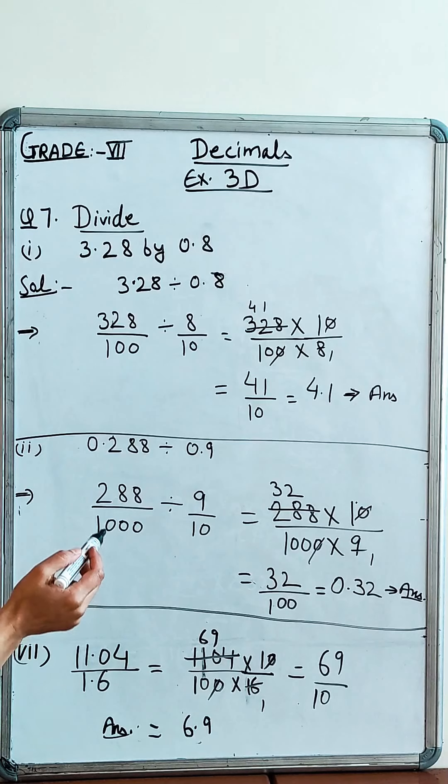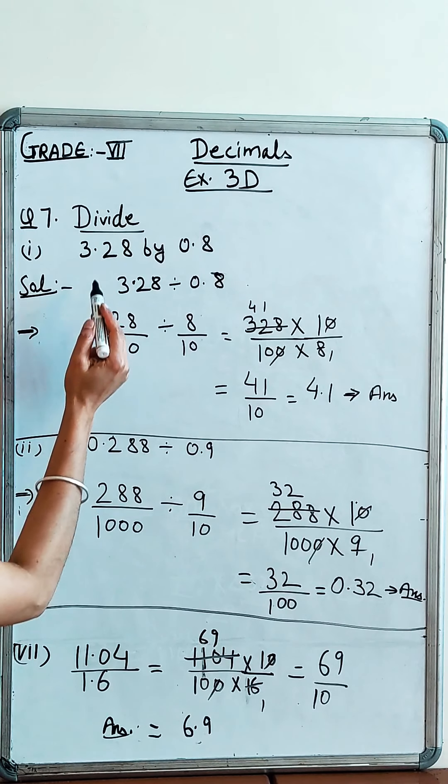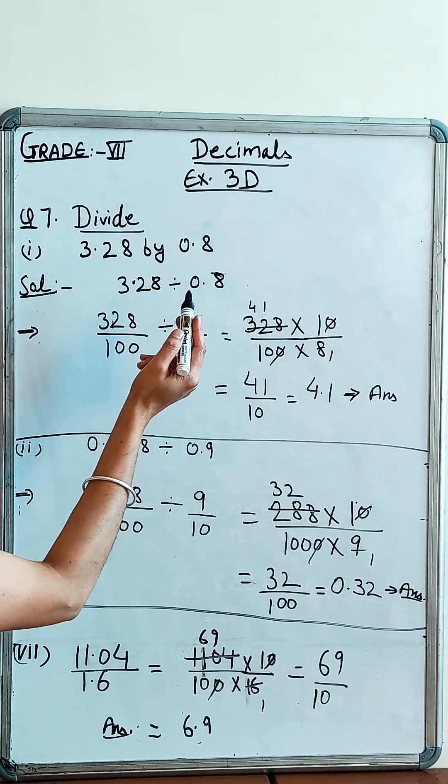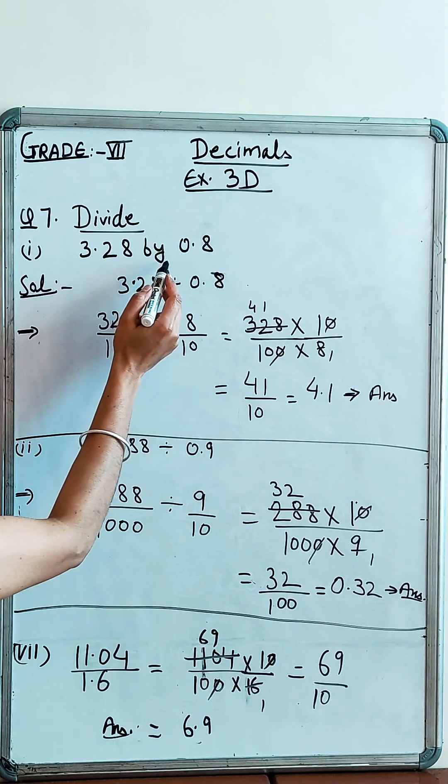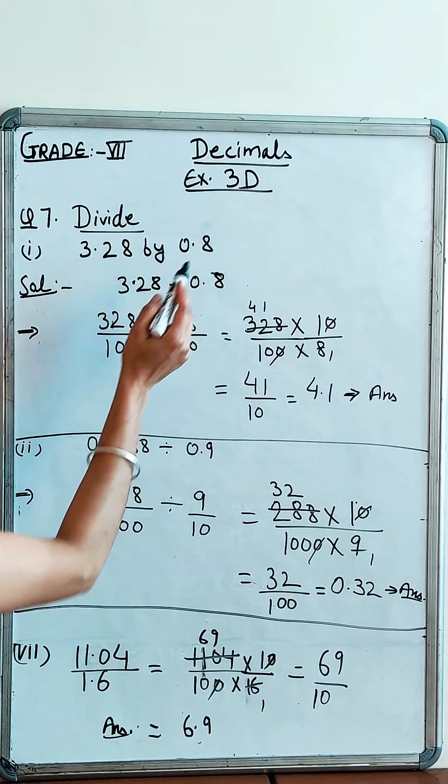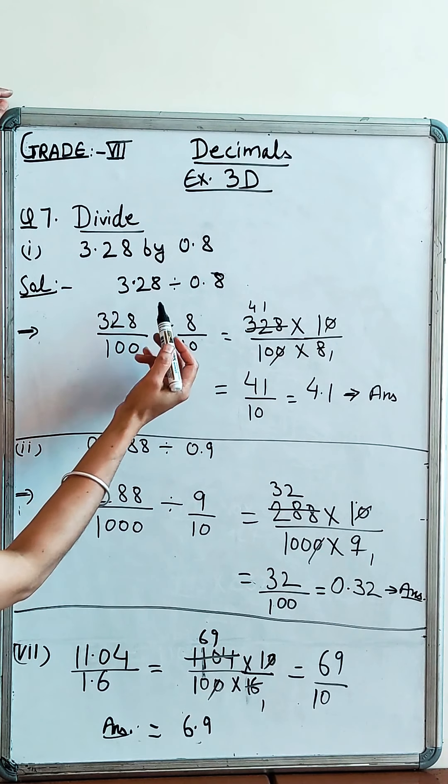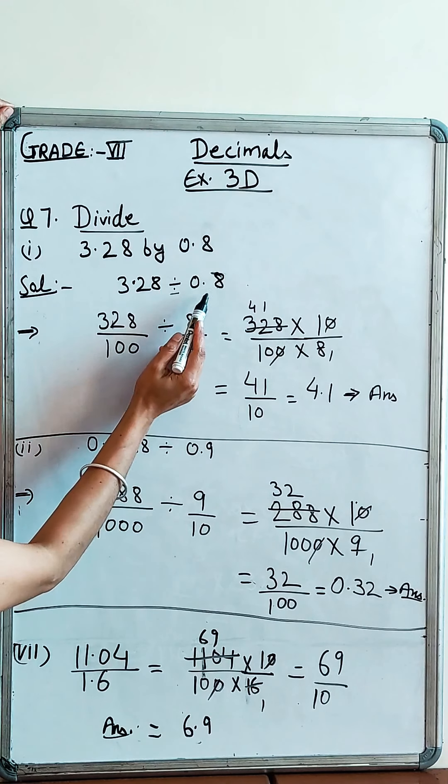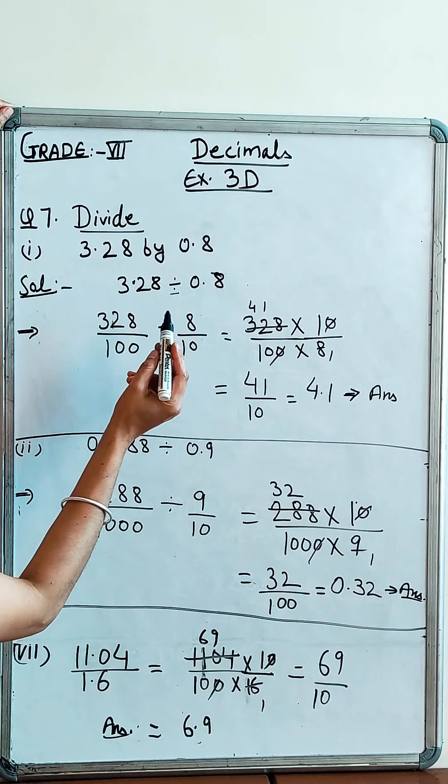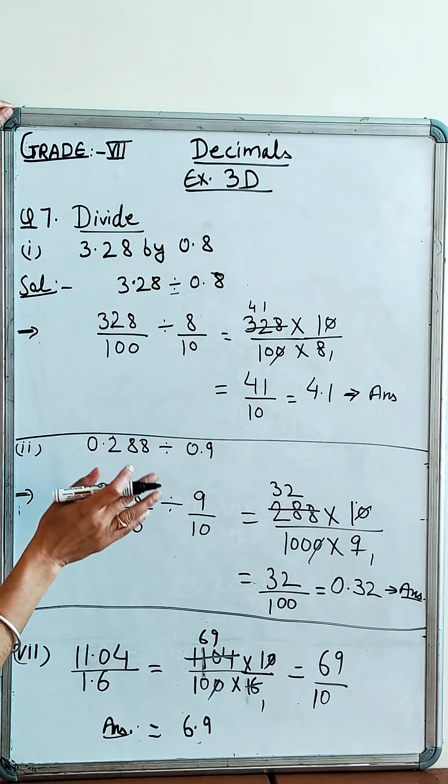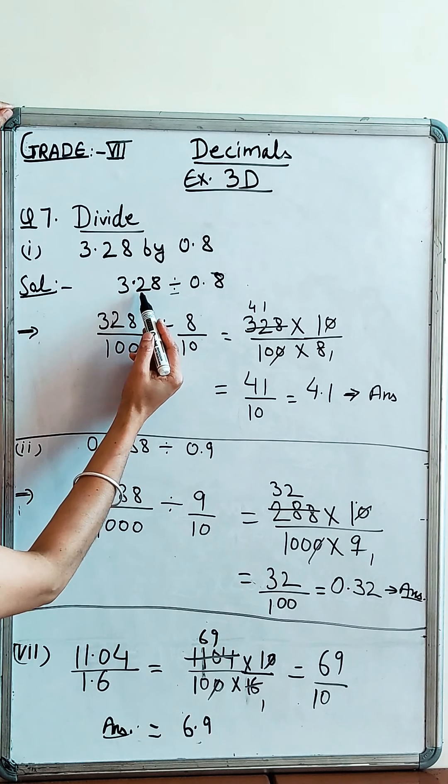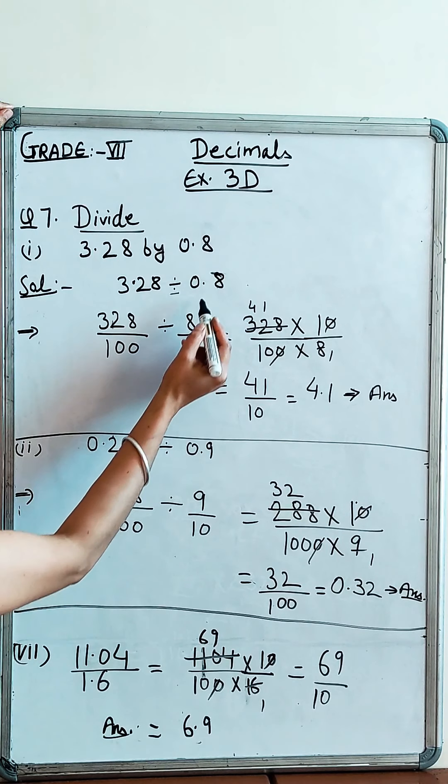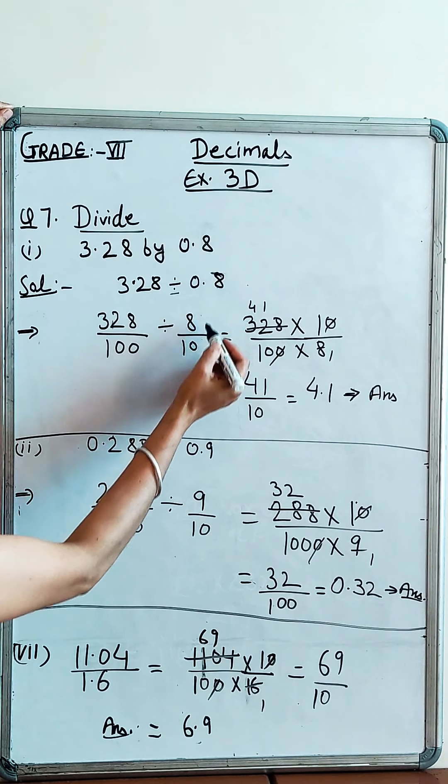So let us do question number 7. Divide. Here you have two numbers in decimal - both denominator and numerator in decimal. 3.28 divided by 0.8. Now, first of all, what do we need to do? We need to know how to divide this way. Now, we cancel decimals. First step, we cancel decimals. It will be 328 over 100 because the decimal is two numbers. Here, divided by 8 over 10.